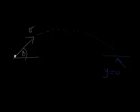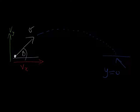So we're decomposing the velocity vector. We've got a vector component along the horizontal — which is Vx — and we have a component upward — which is Vy. V is the resultant of these two vector components, Vx and Vy.